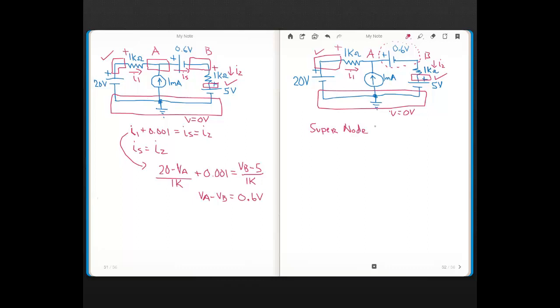And all the term supernode refers to is when you have this case of a voltage source where neither side is connected to ground. So you see, I put a dash circle around what's called a supernode. This is our supernode.